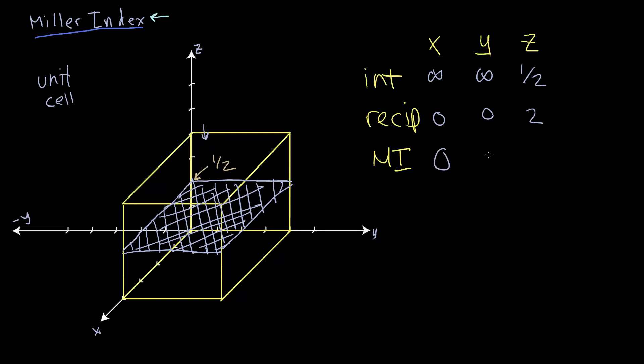We can write down the Miller index for this plane as 0, 0, 2. So this is the 0, 0, 2 plane, which bisects the middle of this cube.